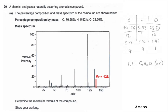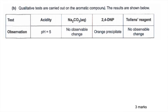We then link it to the Mr of the molecule, 136, and you can see that that's actually double the empirical formula Mr. Therefore we need to double the empirical formula, so we get a molecular formula of C8H8O2.